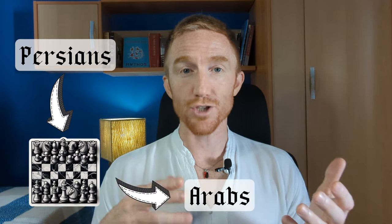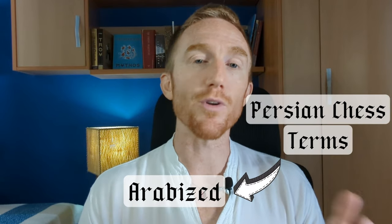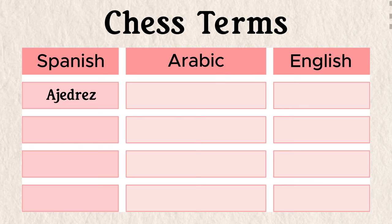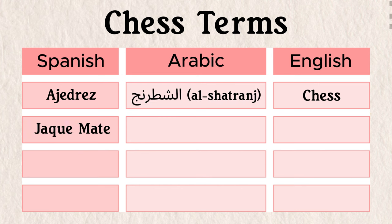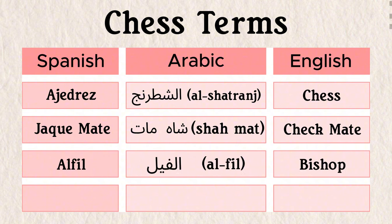Persians taught the game of chess to the Arabs, who then introduced the game to Al-Andalus. Many Persian chess terms became Arabized before they made it into Spanish, and some of the original Persian terminology made it into English as well: ajedrez (chess) from ash-shatranj; jaque mate (checkmate) from shāh māt; alfil (bishop) from al-fīl; and roque (rook) from ar-rukh. Early linguists thought that roque was where rock and roll comes from. They were wrong.